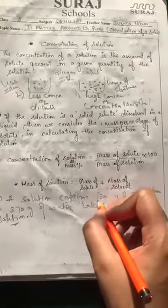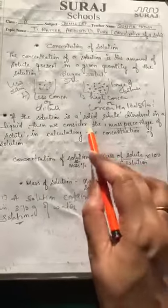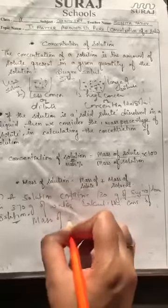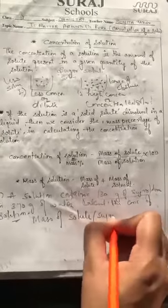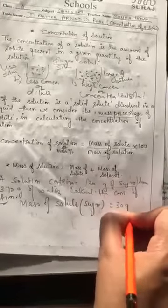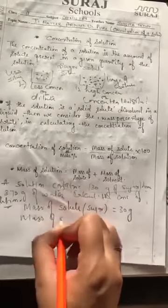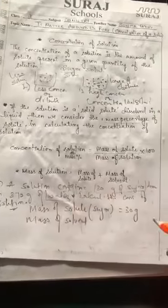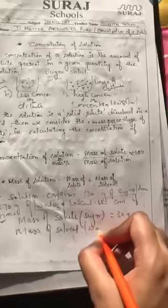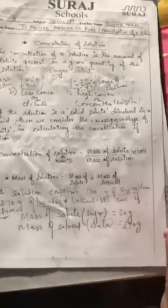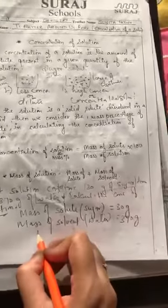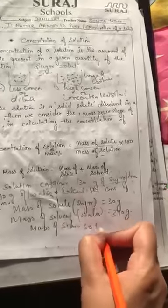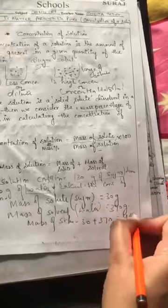Sugar is present in less amount, so sugar is the solute. Sugar is in solid form. The mass of solute — sugar — is 30 grams. Water is a universal solvent, so water is the solvent, with a mass of 370 grams. Now calculate the mass of solution: mass of solution equals 30 plus 370, which equals 400 grams.